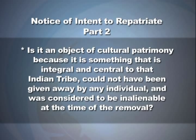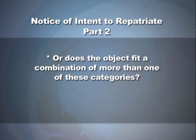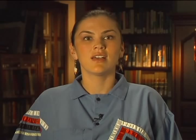Once the category is known and the reason why it fits is described, the next part of the notice describes where the cultural items are from if known, how they came to be in the control of the museum or federal agency, the cultural affiliation of the object, and any other relevant information. There is a template available on the National NAGPRA Program website, as well as a Notices of Intent to Repatriate Cultural Items database for reference.